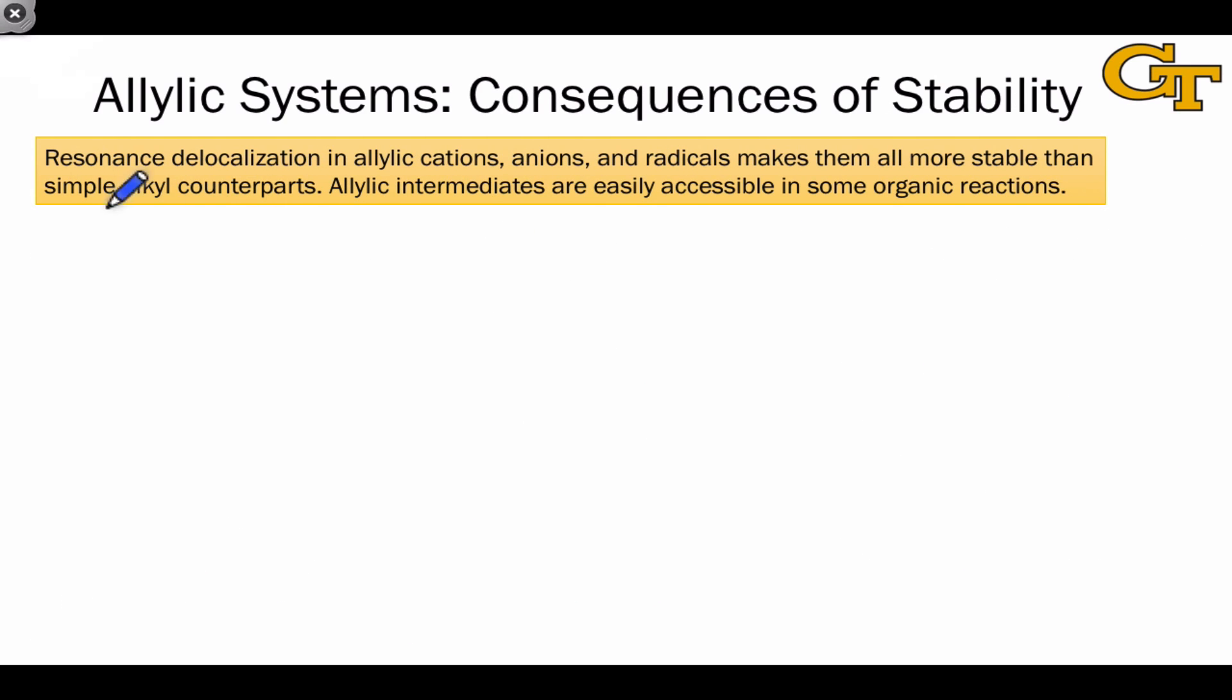Allylic cations, anions, and radicals are stabilized by resonance delocalization, an idea that we've seen many times before. This makes allylic species more stable than comparable alkyl counterparts like propyl cation, propyl radical, and propyl anion. And this makes allylic intermediates easily accessible in certain types of organic reactions, many of which we've seen before.